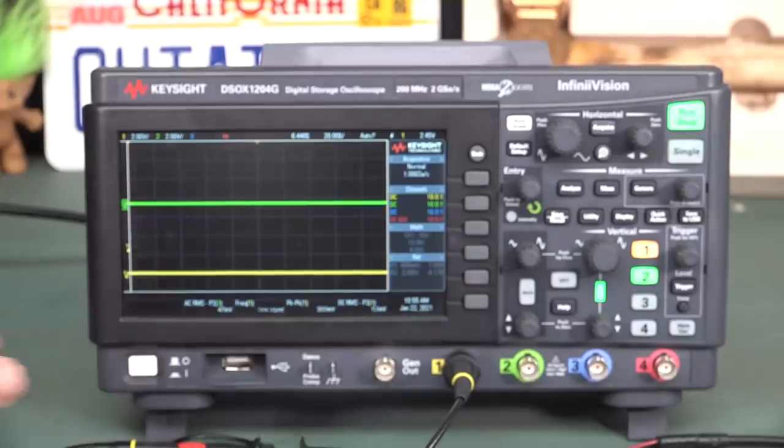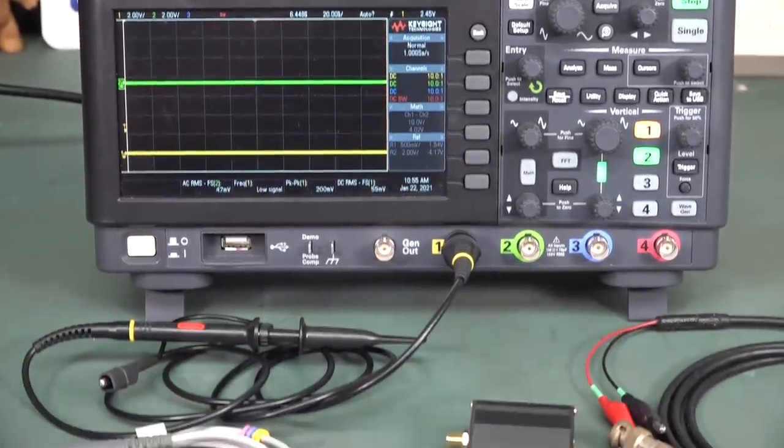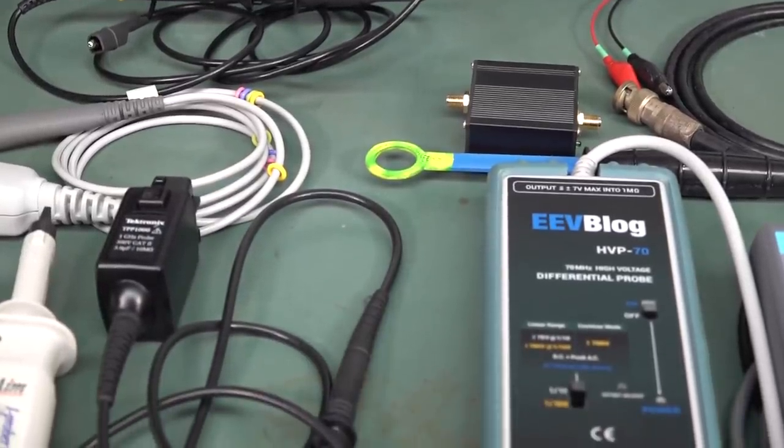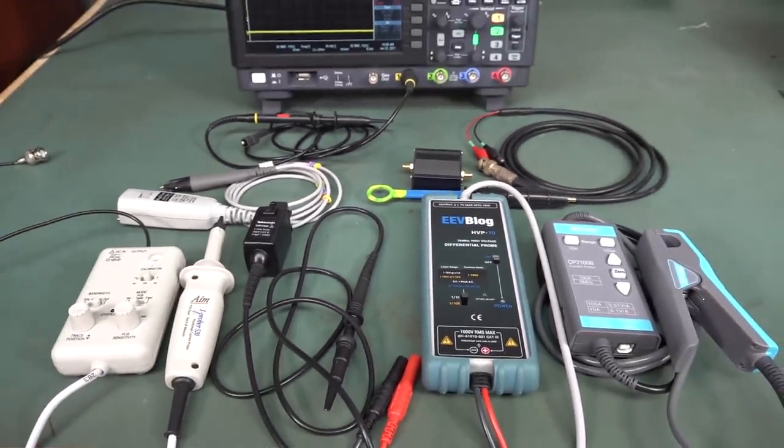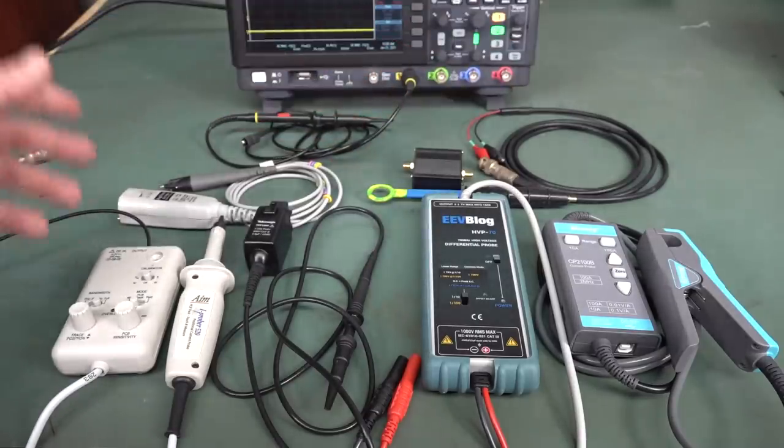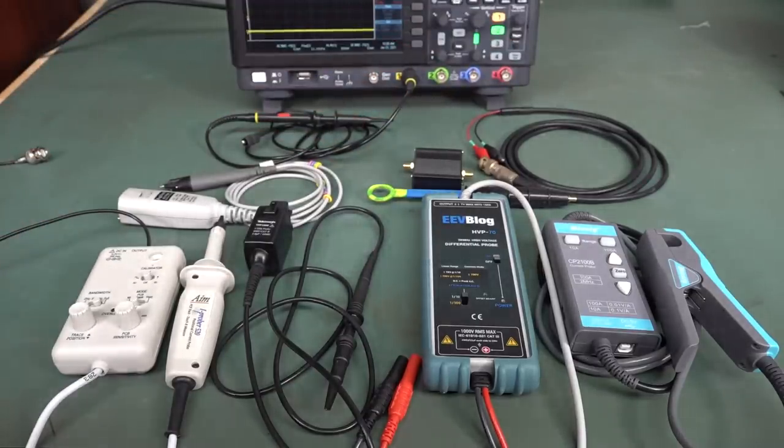And that's what we're going to take a look at in today's video, because I have, check it out. Not one, not two, not three, not four, not five, not six, but seven different types of oscilloscope probes. Actually, technically eight. And we're going to look at each individual one, the pros and cons, and what they're used for. Let's go!